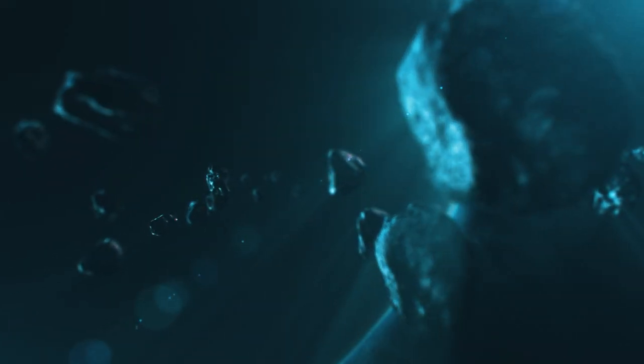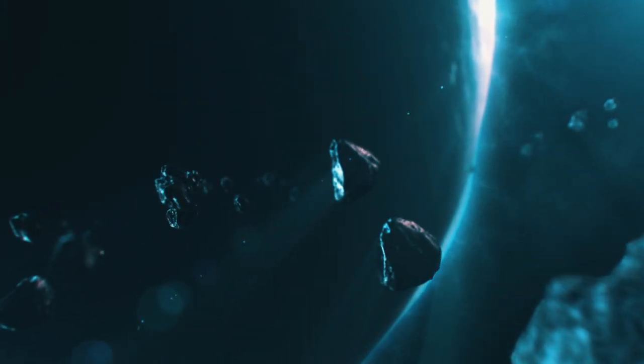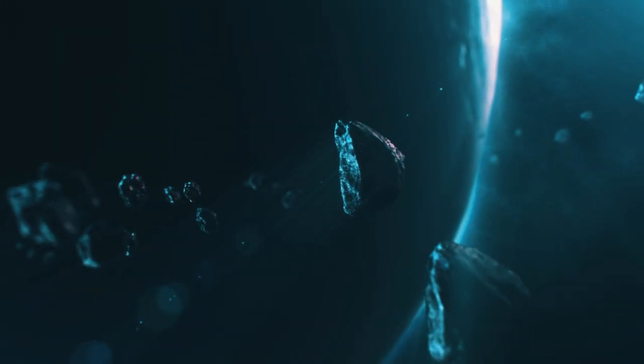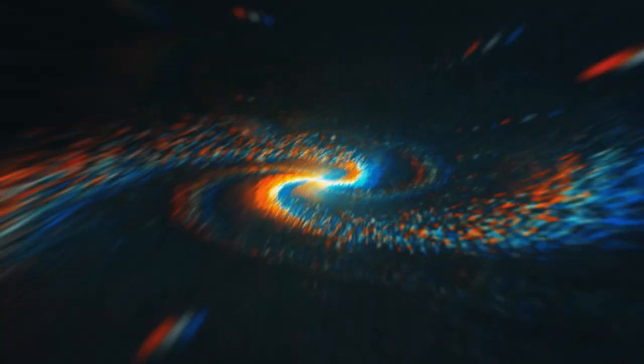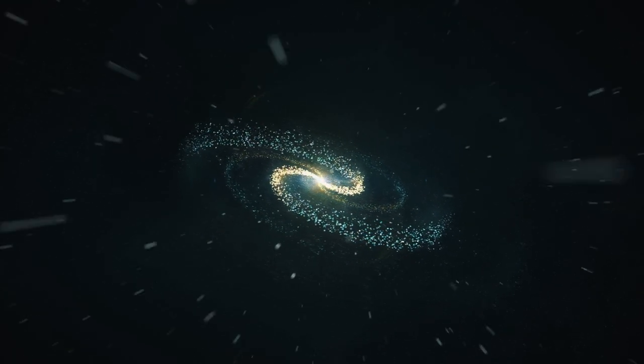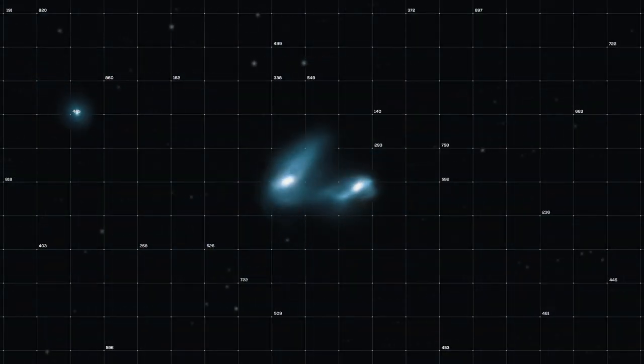As the universe expands, the gravity between galaxies becomes weaker and the acceleration of cosmic expansion grows stronger. However, the big crunch predicts that at some point in the future, the gravitational pull of all matter in the universe will eventually slow down and reverse the expansion, causing the universe to collapse in on itself.